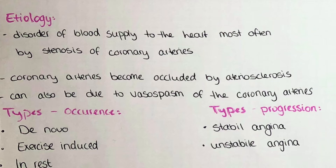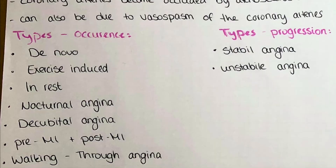The blood flow through the arteries can also be reduced when the vessel lumen is reduced due to vasospasm. This is the cause of a specific type of angina called Prinzmetal angina.